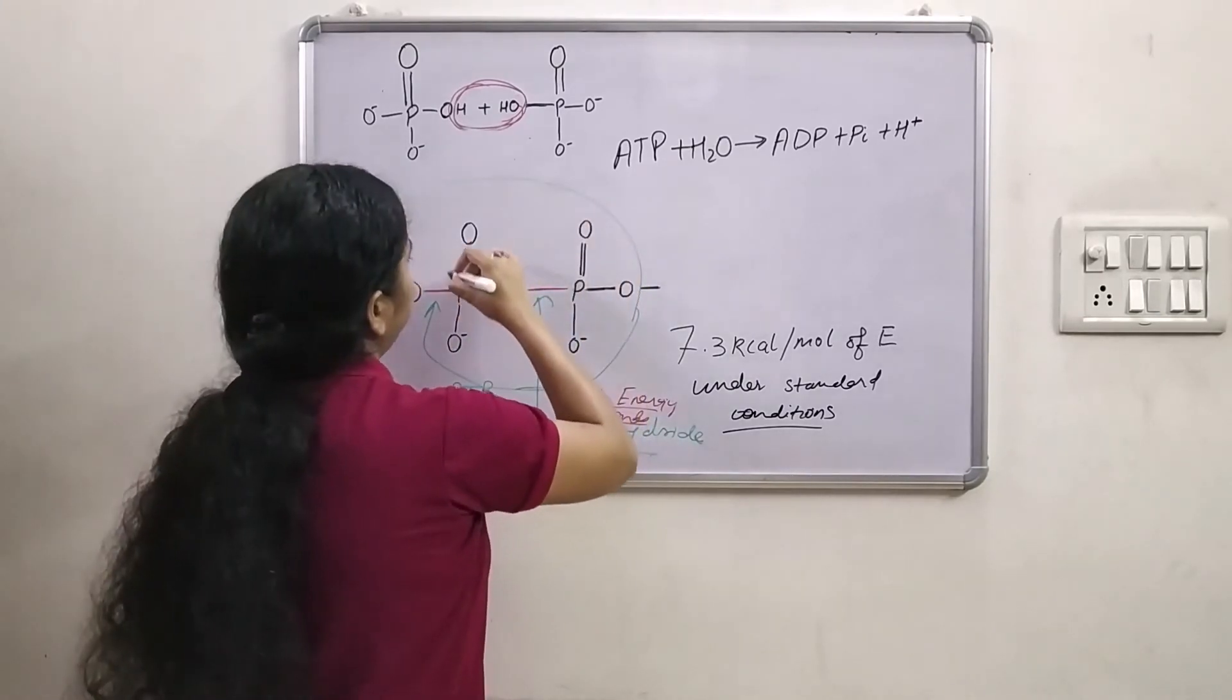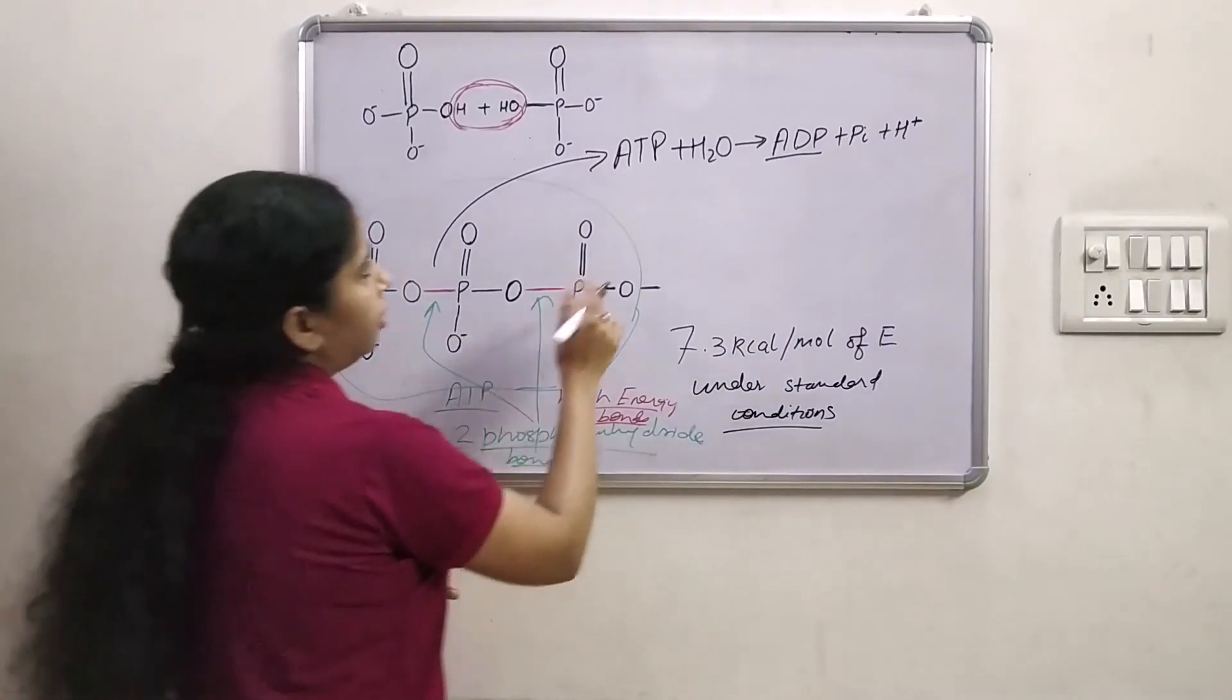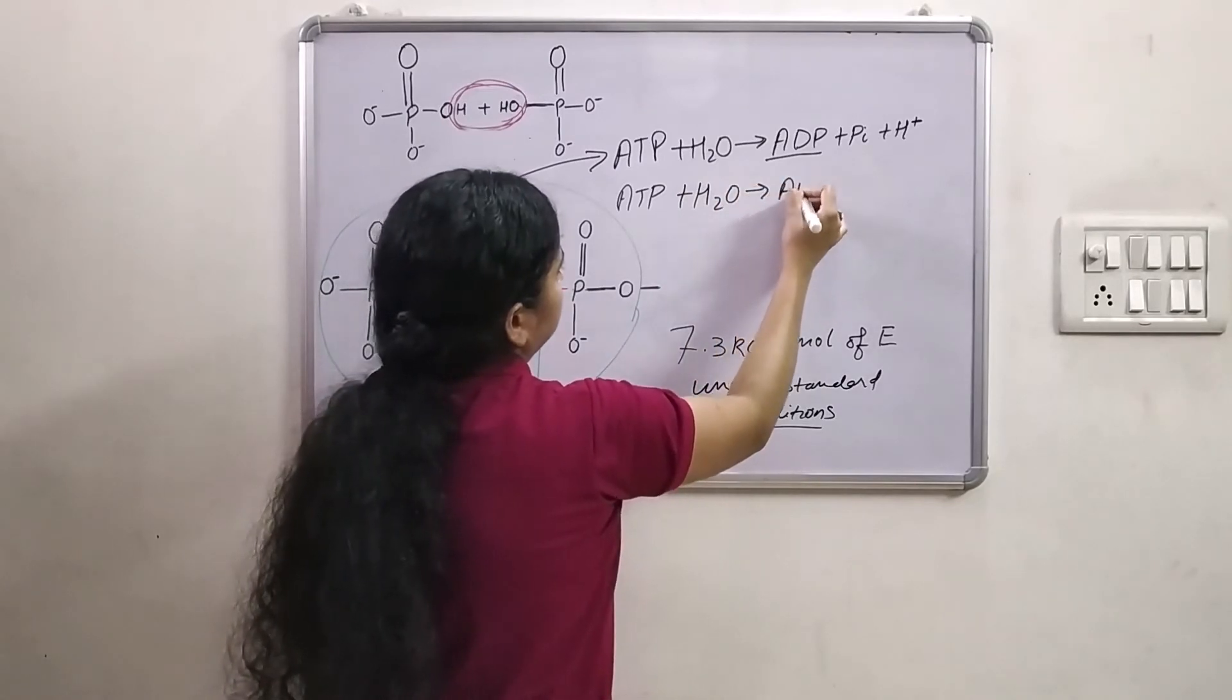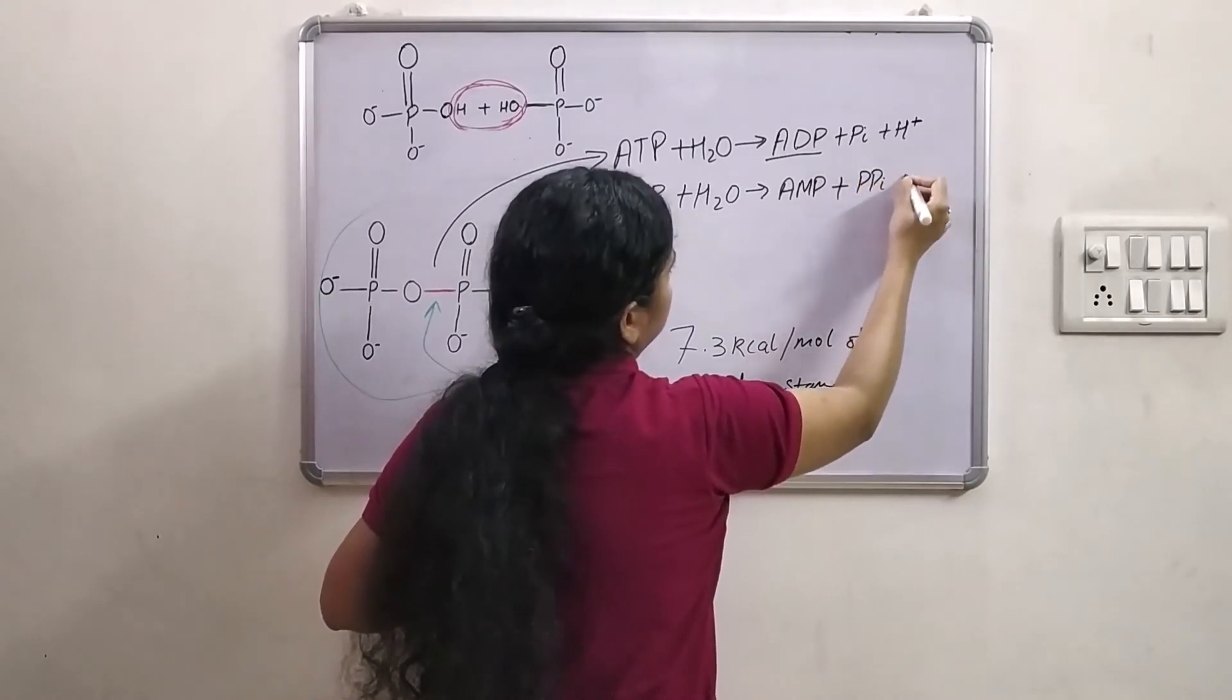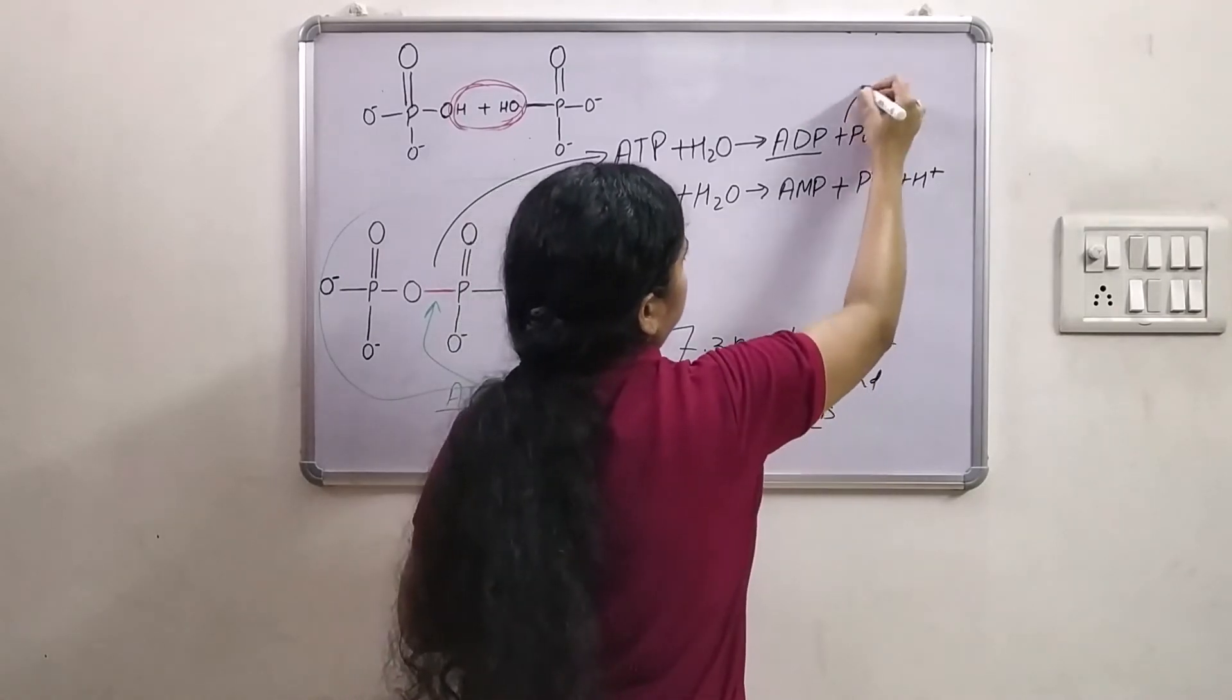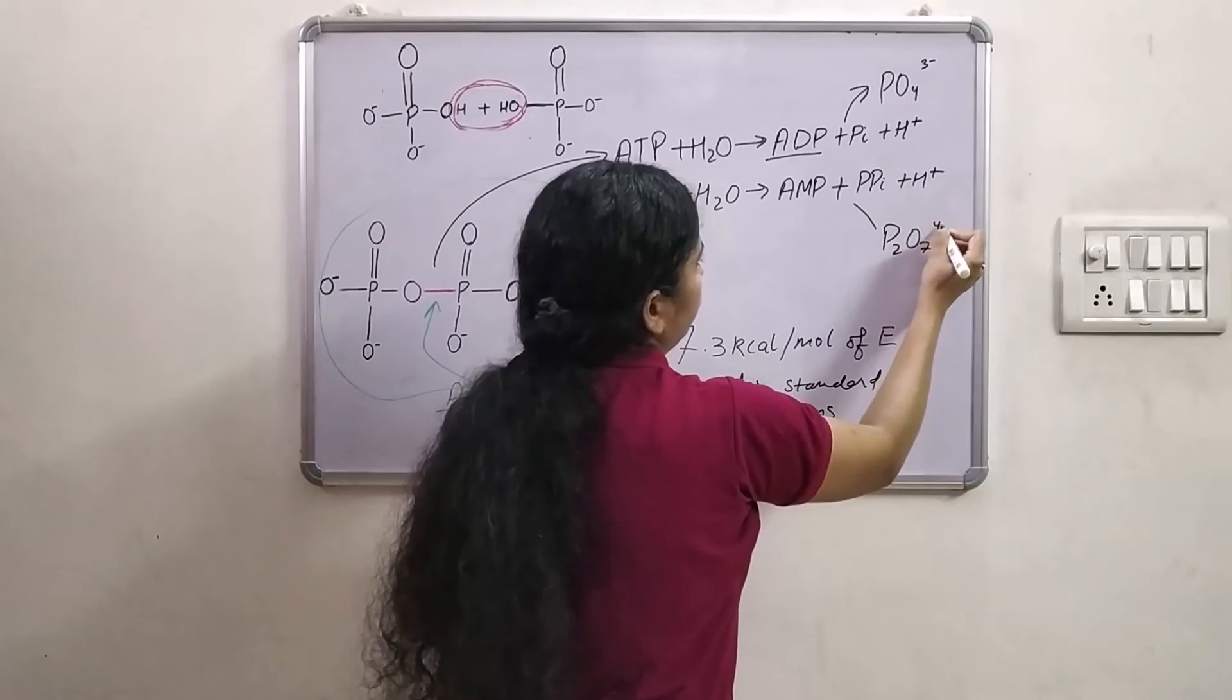And the reaction can be written as this. Where ADP is adenosine diphosphate. Now when both the phosphoanhydride bonds hydrolysis then it can be written as. So this is adenosine monophosphate and this is pyrophosphate. So this is PO4 3- and this is P2O7 4-.